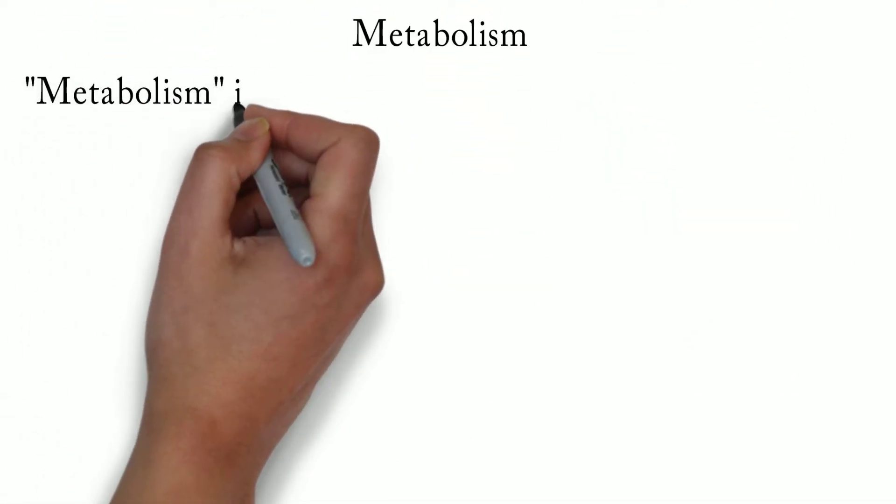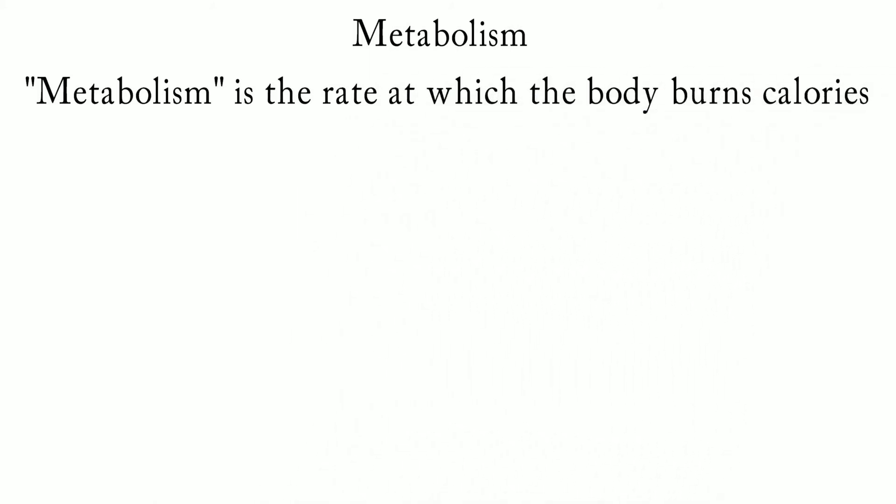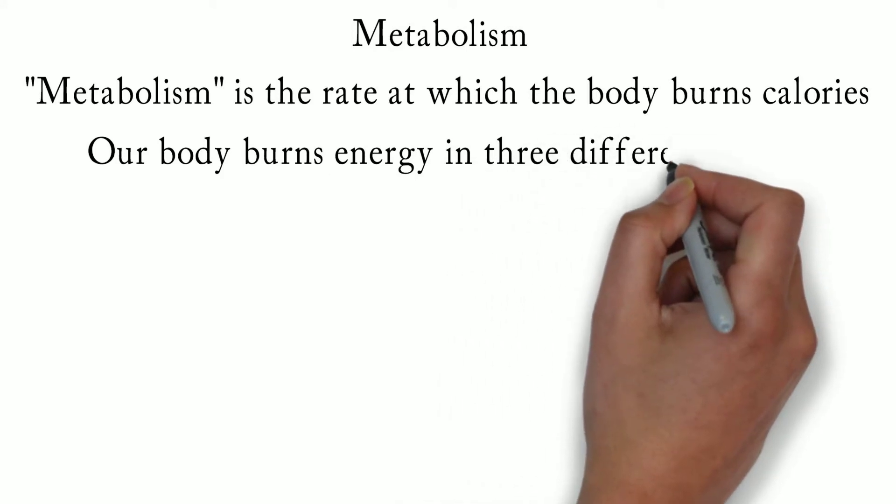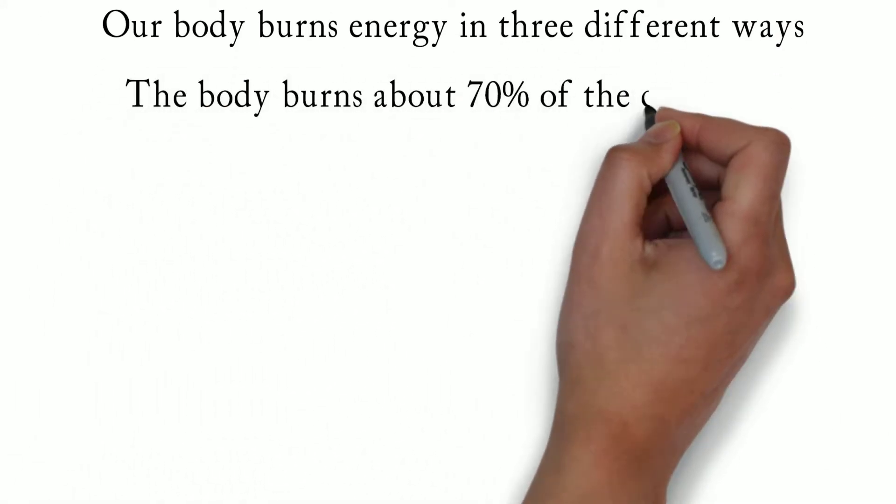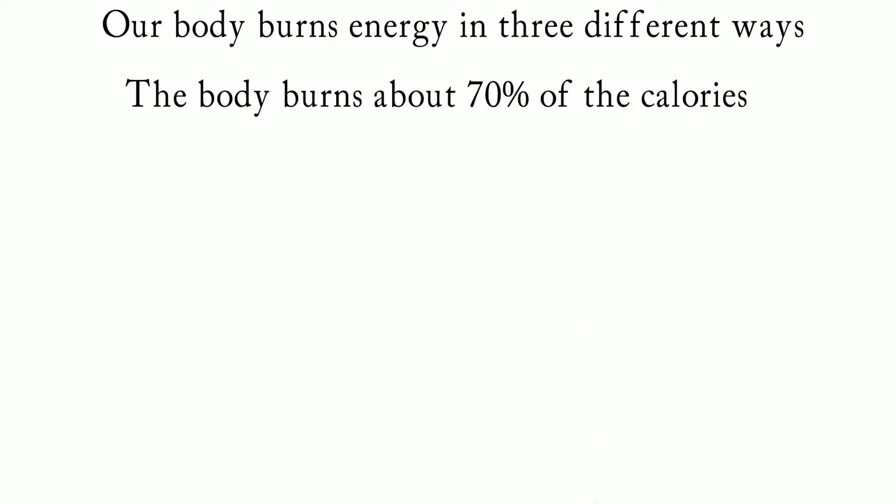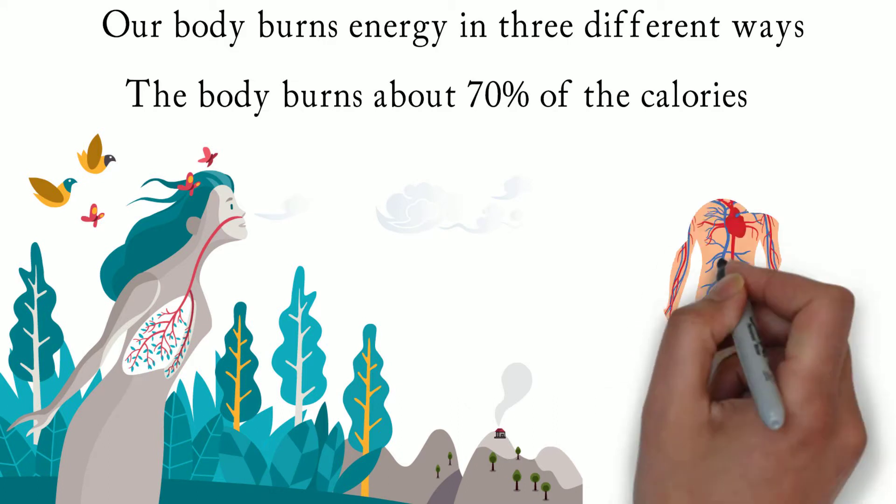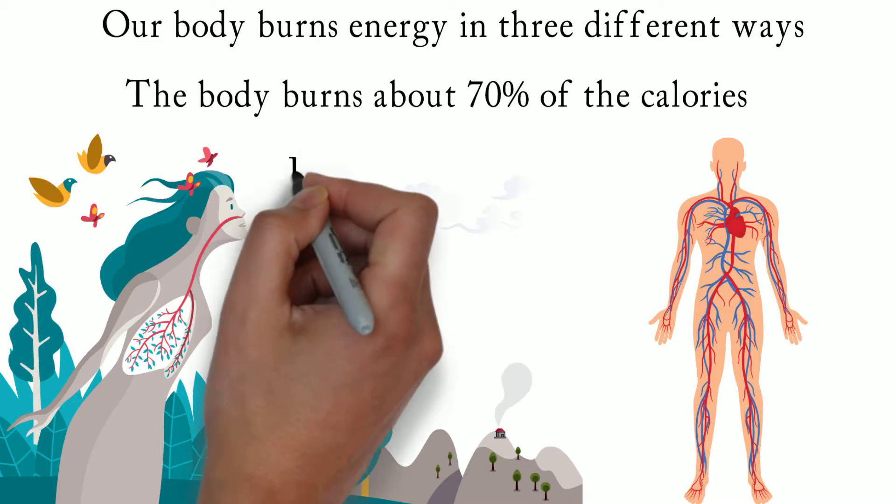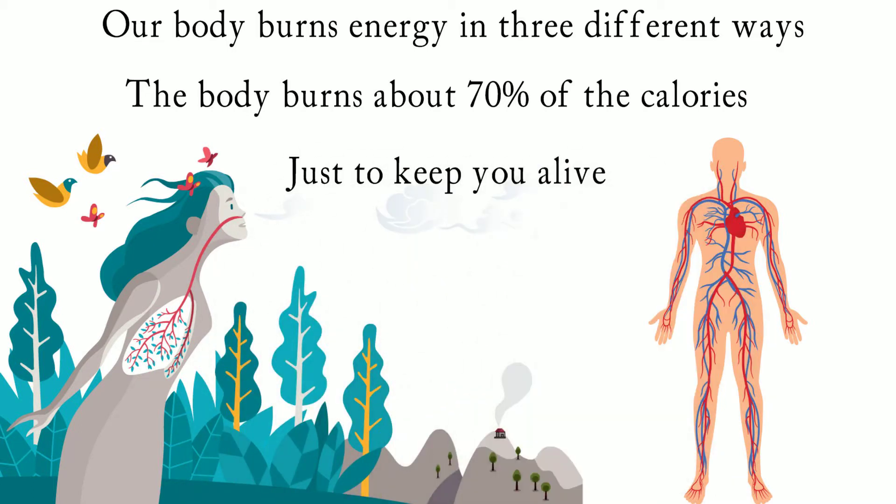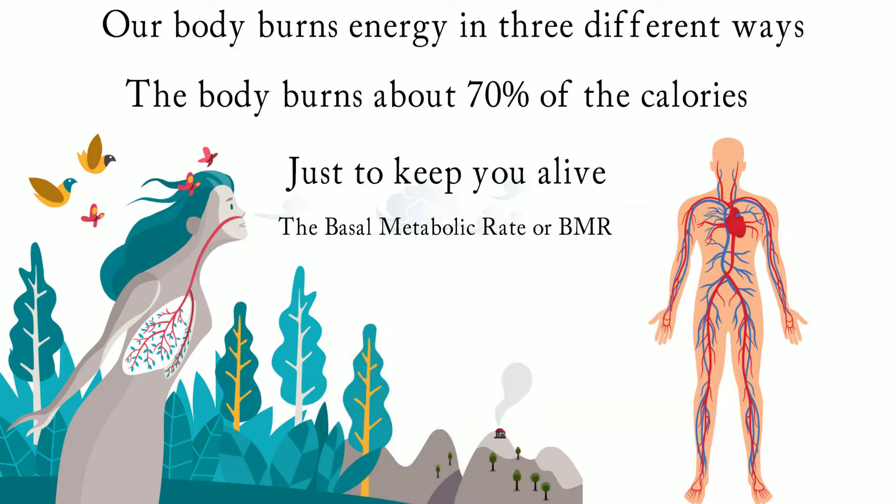Let's talk about metabolism. Metabolism is the rate at which the body burns calories. Our body burns energy in three different ways. The body burns about 70% of the calories intake for just the basic body functions, like breathing, circulating blood, maintaining body temperature, brain activities, producing new cells and the rest of the body organs. In other words, just to keep you alive. This is called the basal metabolic rate, or BMR.